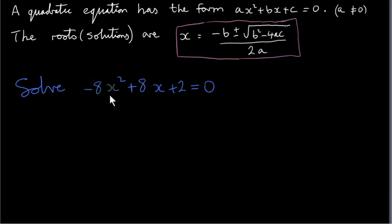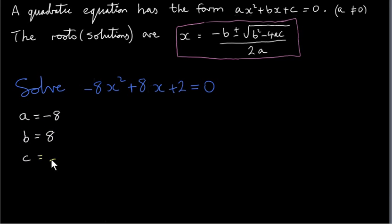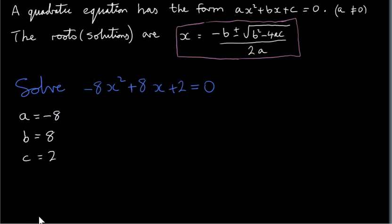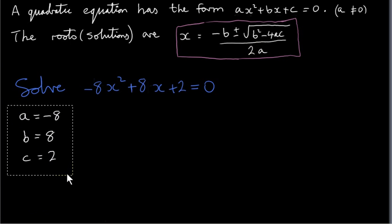Now, suppose we want to solve this equation: minus 8x squared plus 8x plus 2 equals 0. As it stands, we could write down a, b, and c. a is the coefficient of x squared, which is minus 8. b is the coefficient of x, which is 8. c is the constant term, which is plus 2. We could plug these numbers into our formula and get the two solutions. However, if you want to, you could simplify this down — I will do some slight simplification.